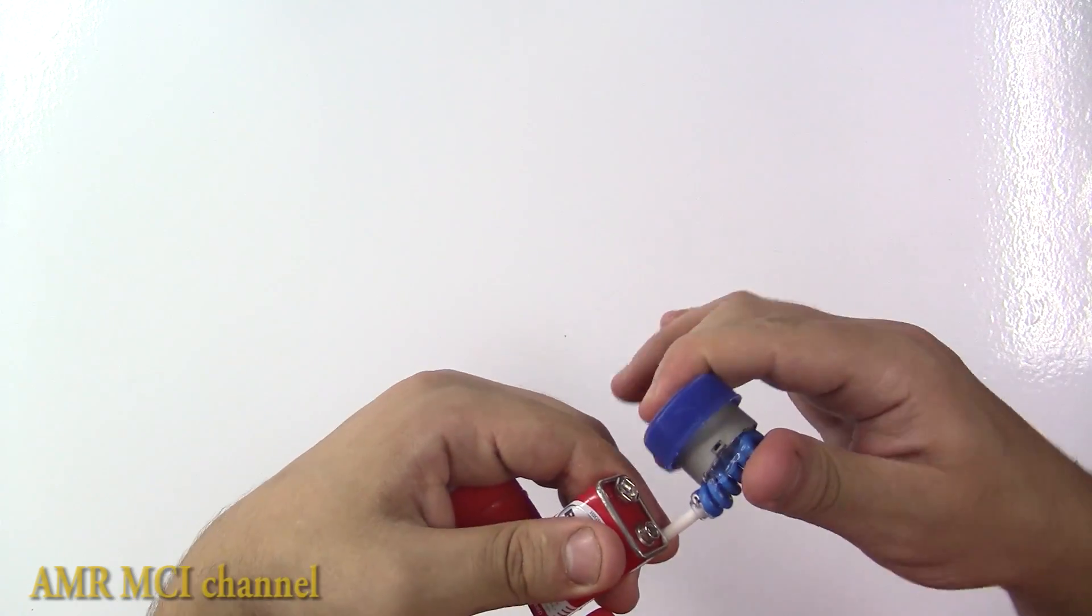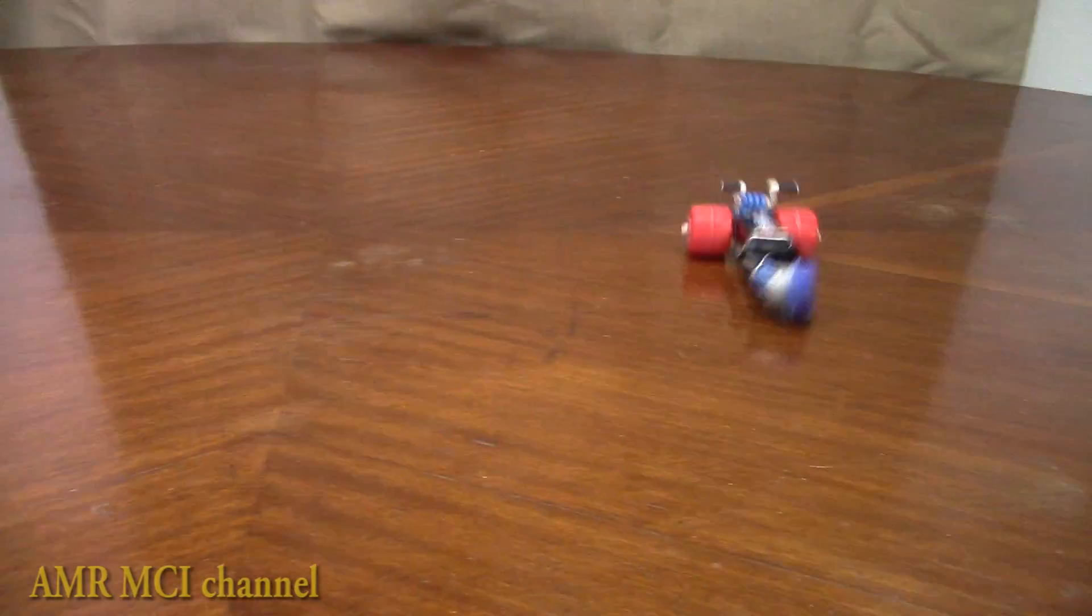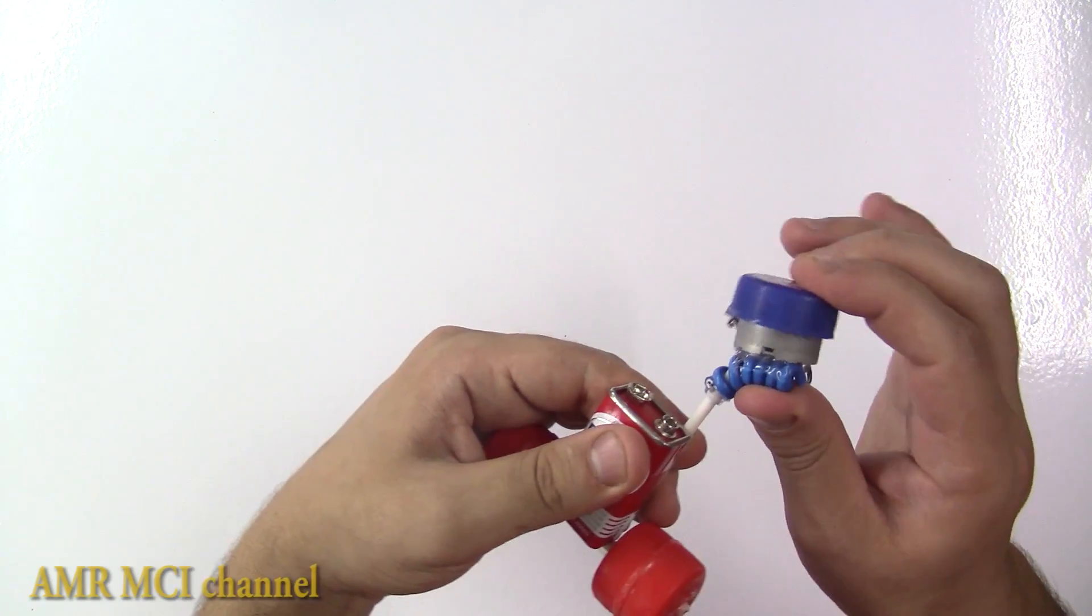For more excitement, bend the curled wire to either direction and it will start moving in a circular motion. The more you bend the wheel, the crazier it goes.